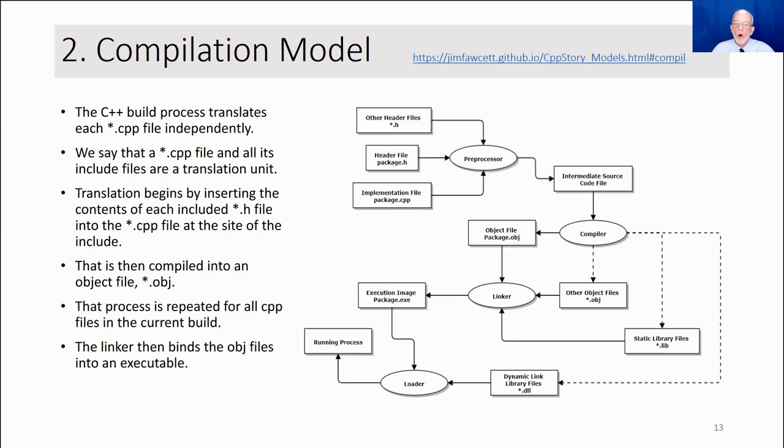Now, when the linker has all the OBJ files and or libraries, it's got all the things it needs to resolve those references. Basically, what happens is as it's compiling, it's building a link map, and all those references can be resolved within that link map. And so that results in an execution image. So all of the OBJ files and any static library files that were built get resolved by the linker, and it builds an execution image.